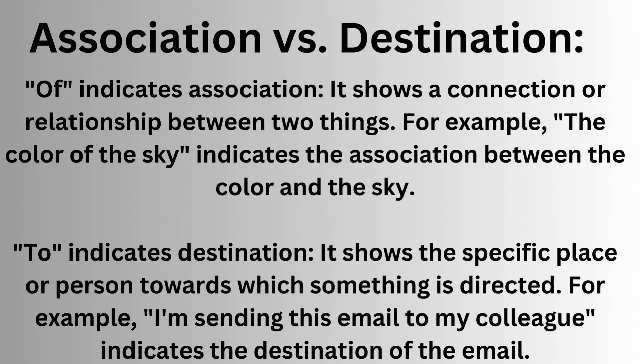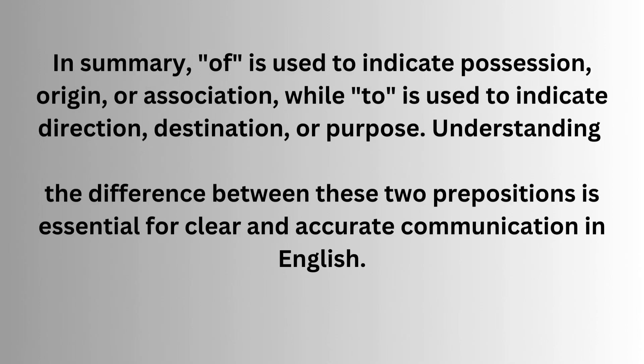Association versus destination. 'Of' indicates association — it shows a connection or relationship between two things. For example, 'the color of the sky' indicates the association between the color and the sky. 'To' indicates destination — it shows the specific place or person towards which something is directed. For example, 'I'm sending this email to my colleague' indicates the destination of the email.